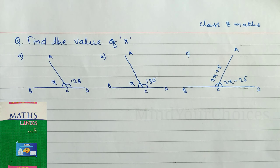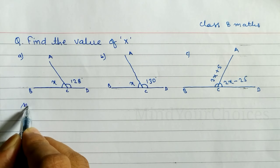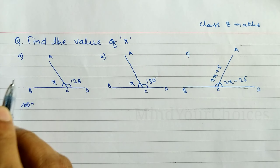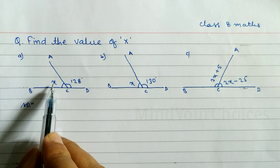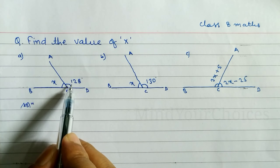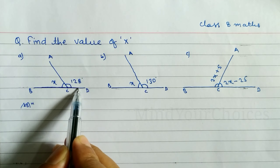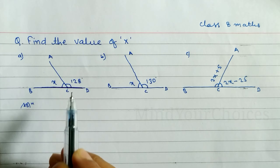Hello everyone. In this video we will learn how to find out the value of x. These questions are taken from the angles chapter. In question number a, when you add these two angles we get 180 degrees, because here you can see this is a straight line.